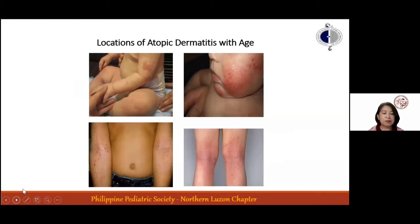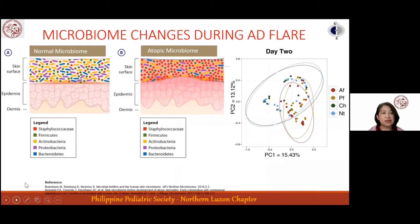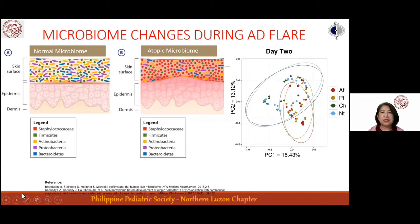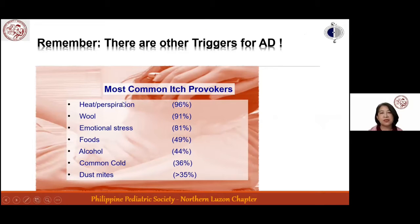Dysbiosis is best demonstrated in atopic dermatitis. Normal skin shows high microbial diversity with varied compositions, while skin with atopic dermatitis shows lesser diversity with predominance of Staphylococcus species. Other triggers include sweating as the most common, followed by irritating clothes like wool, emotional stress at 81%, food at 50%, common cold or viral infections, and indoor allergens such as dust mite.